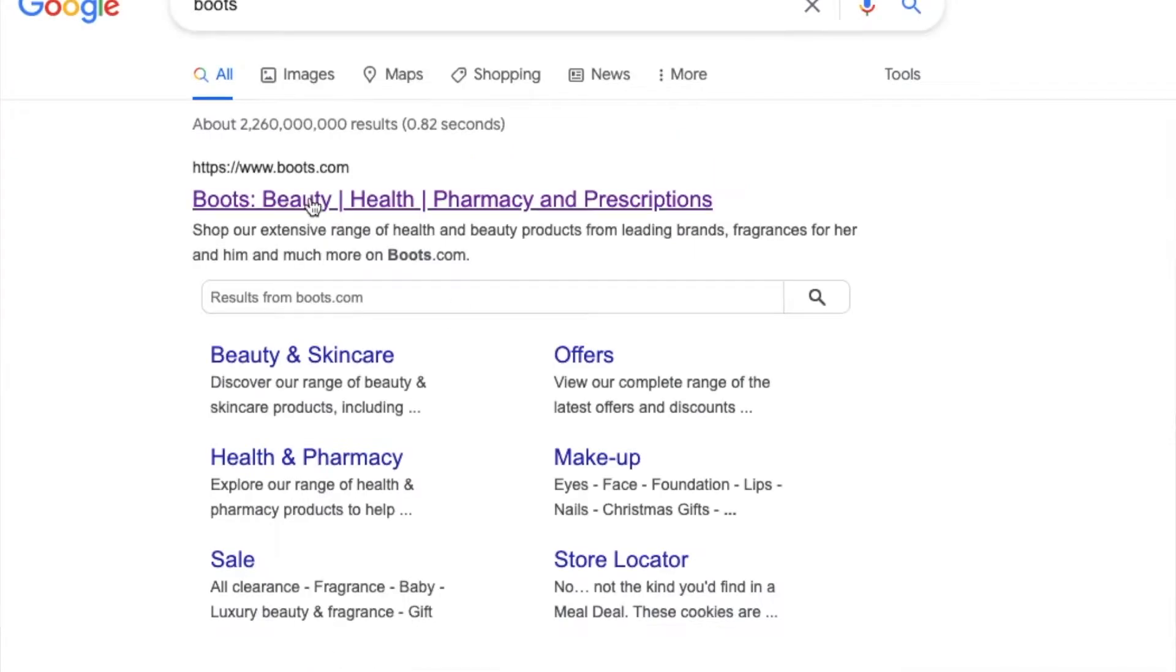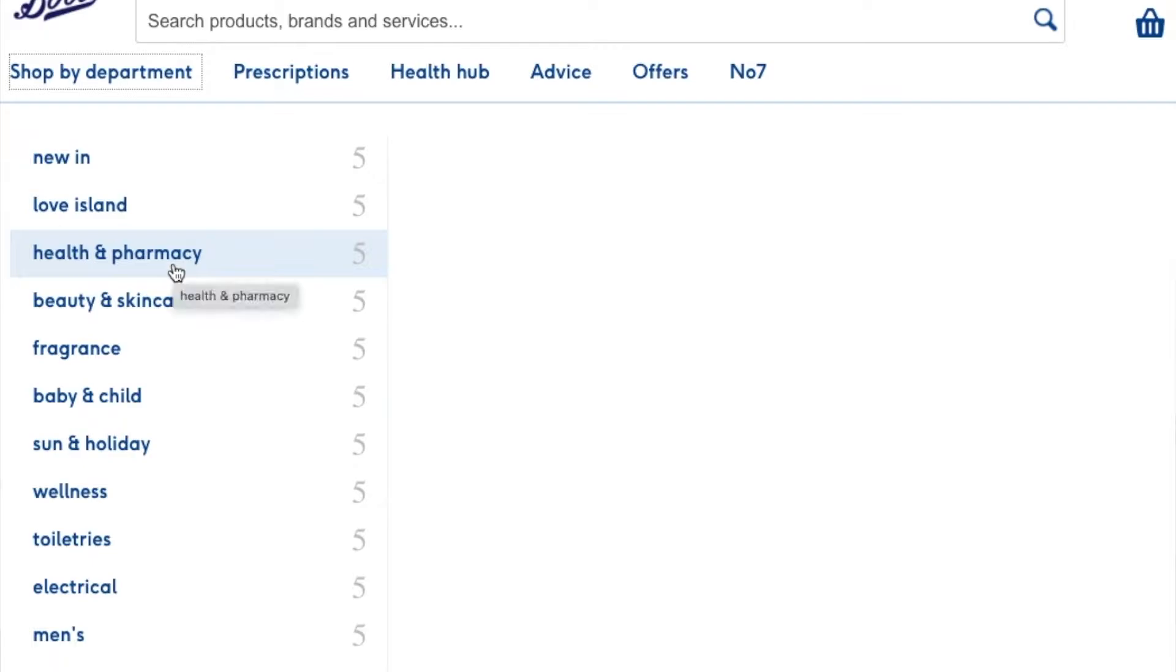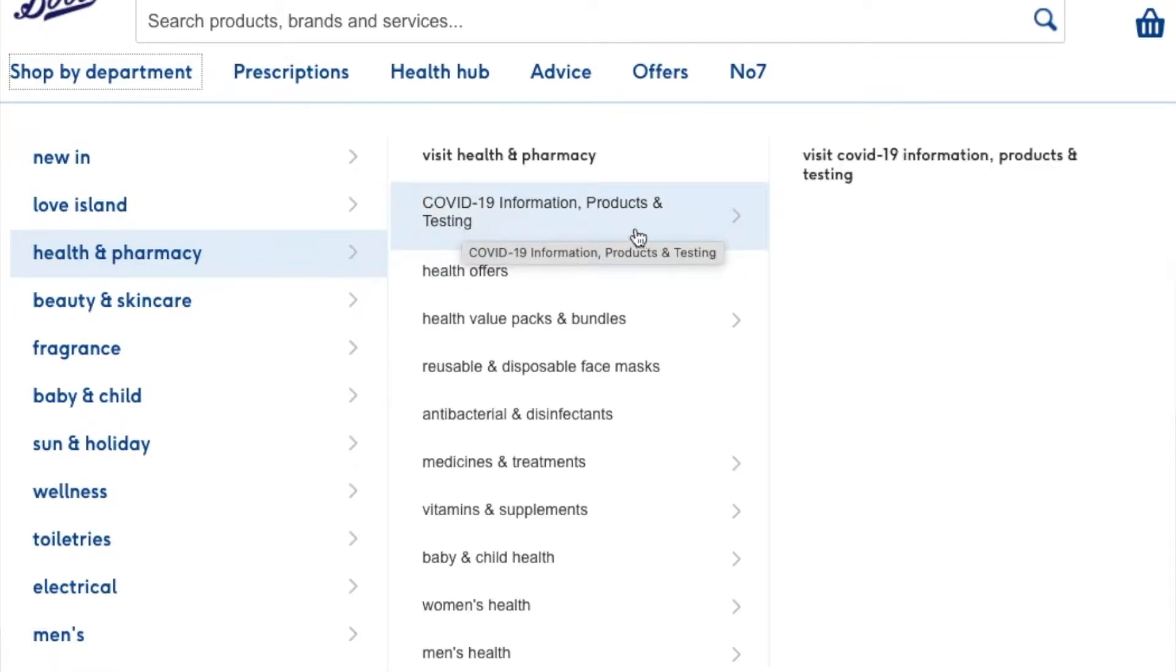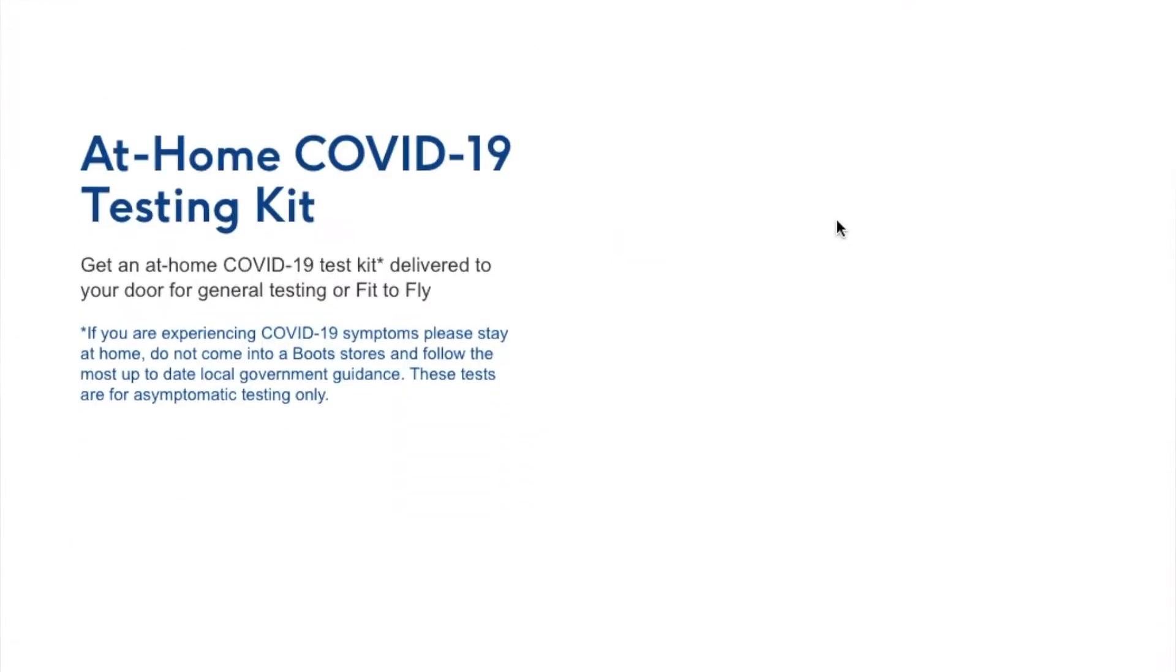First of all, let's talk a little bit about how to get your COVID test kit. We ordered ours online using Boots' website. We basically went to health and pharmacy, COVID-19 information, products and testing, and then clicked on at home COVID-19 testing kits. It took them four days to arrive and it's 65 pounds per kit.